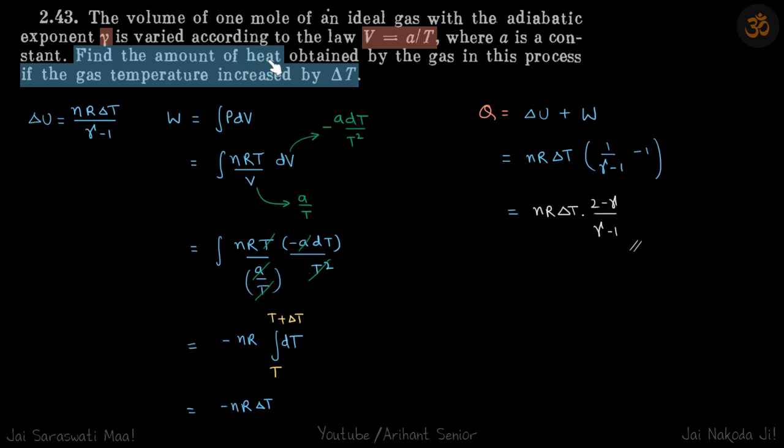Let's try to get heat in terms of temperature. We know heat is delta U plus W. So individually, let's write that delta U, the change in internal energy, is nR delta T by gamma minus one. Delta T is given, everything is given to us.